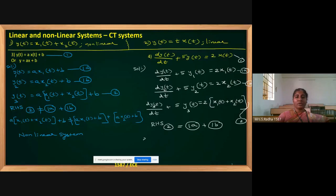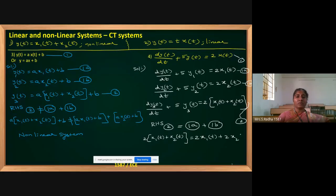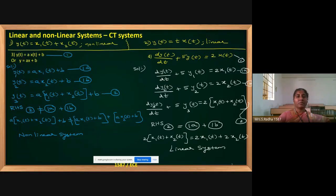In equation 2, the RHS is 2 times x1 of t plus x2 of t. In equation 1a the RHS is 2 times x1 of t, and in equation 1b the RHS is 2 times x2 of t. Adding 1a and 1b gives exactly 2 times x1 of t plus x2 of t — this exactly matches equation 2. Both sides match, so the system is a linear system. This is our conclusion for question number 4.